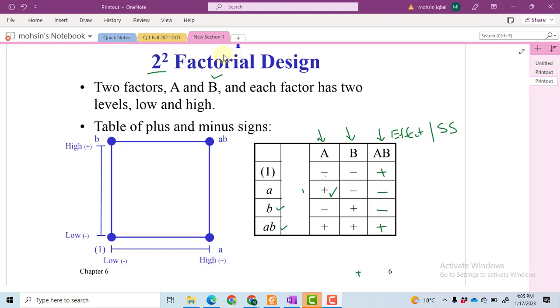For the experiment that has both A and B at low level, we mark it as (1) with brackets. For the experiment with A at plus and B at low level, it's named as small a. Factor B at high level and A at low level gives the effect of B, and both at high level gives the effect of the interaction term AB.